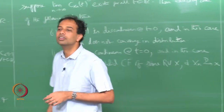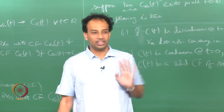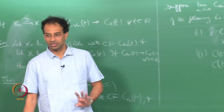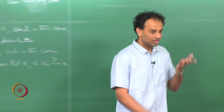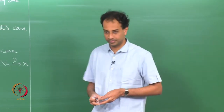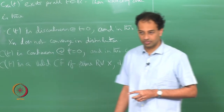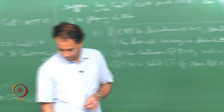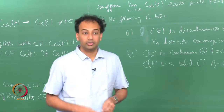This is very useful: if you take the limit of a sequence of characteristic functions and verify continuity at t equal to 0, you can immediately assert convergence in distribution. This theorem will be very instrumental in proving the central limit theorem and even the weak law of large numbers.